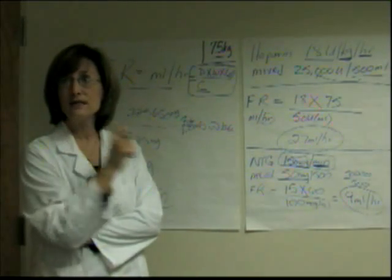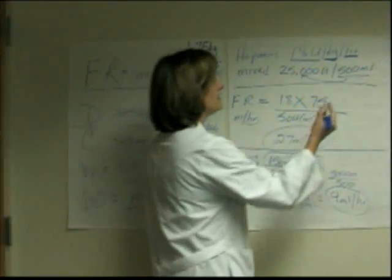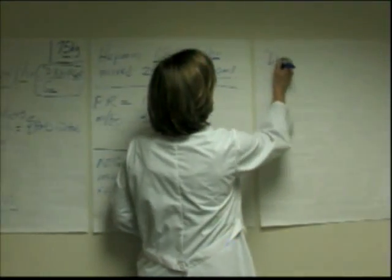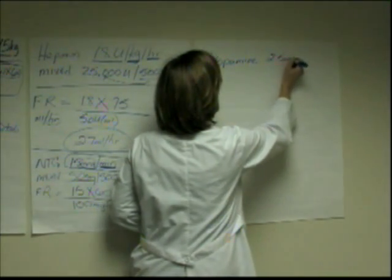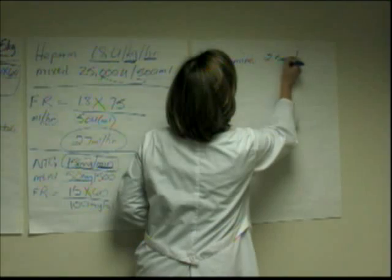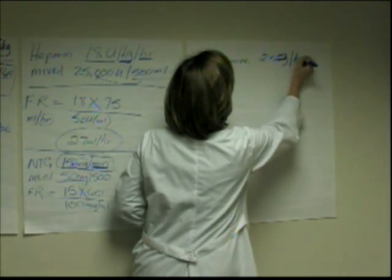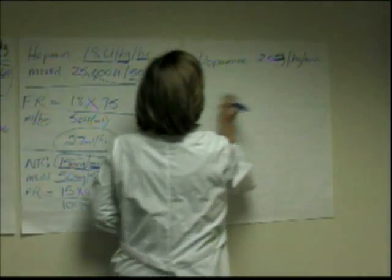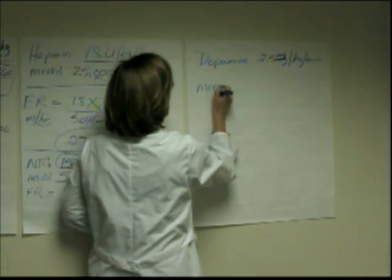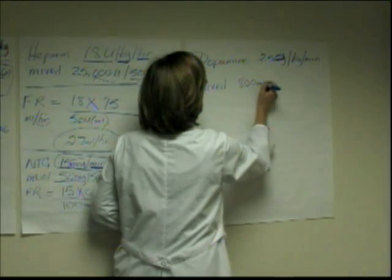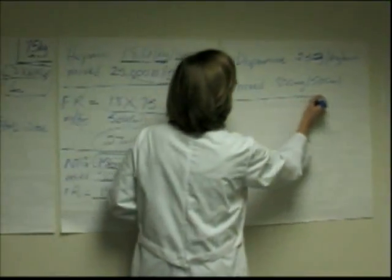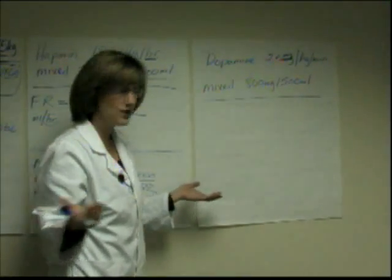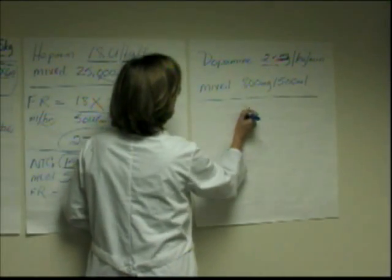Let's do the last one — this is probably the most complicated kind you'll have to do. This time we are doing a dopamine drip ordered at 2.5 micrograms per kilogram per minute. The dopamine is mixed 800 milligrams in 500 milliliters, and our patient weighs 75 kilograms. We always start with dose over concentration. The dose ordered is 2.5 micrograms.